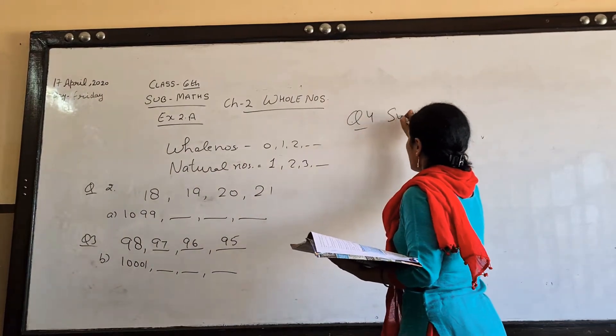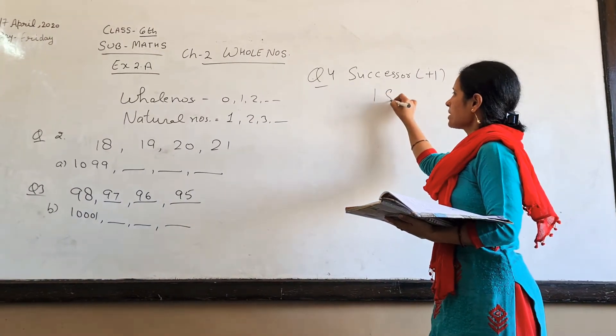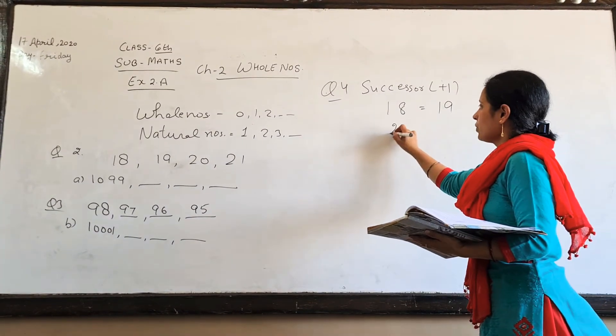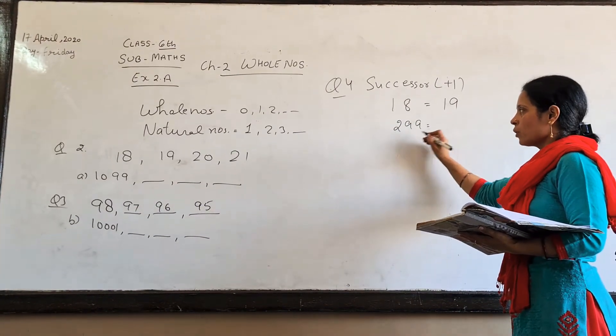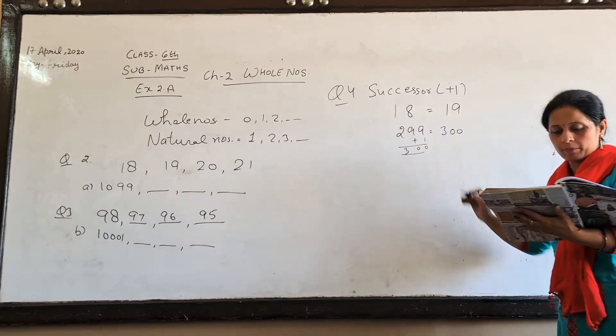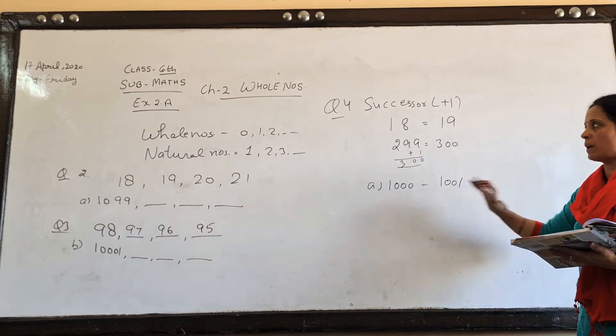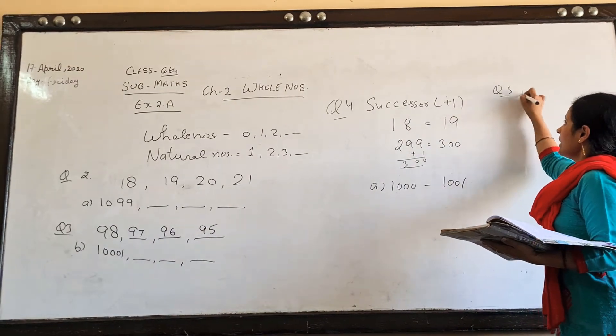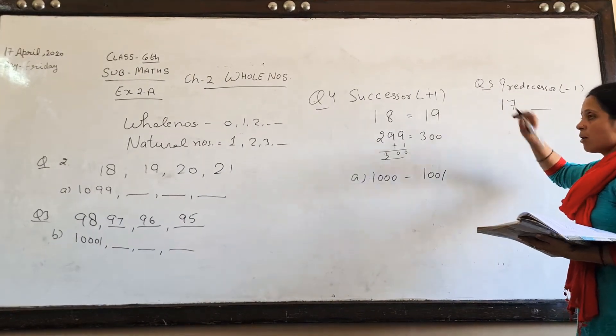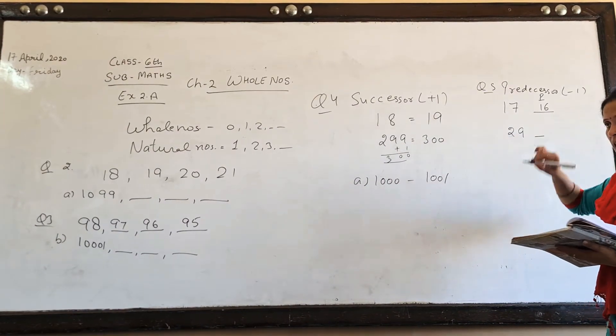Now question number 4. In question number 4 you have to get the successor. Successor is adding 1. What's after these numbers? So now you get the next number. If you ask 29, what will happen? You will answer 21.